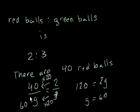A lot of you might actually find it more intuitive just to think about it. Well, if for every 2 red balls there are 3 green balls, then if there are 40 red balls, then it makes sense that there would be 60 green balls. Because for every 20, there would be 30. For every 40, there would be 60. I hope I'm not completely confusing you.